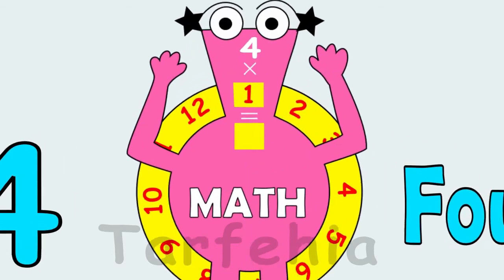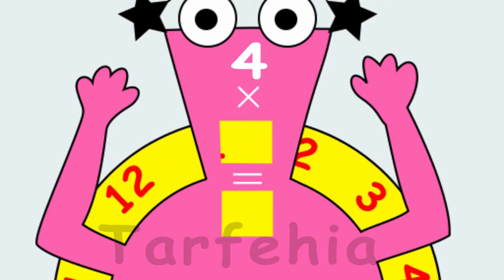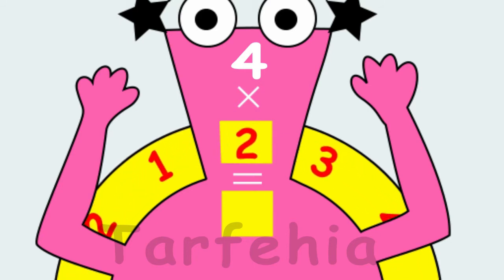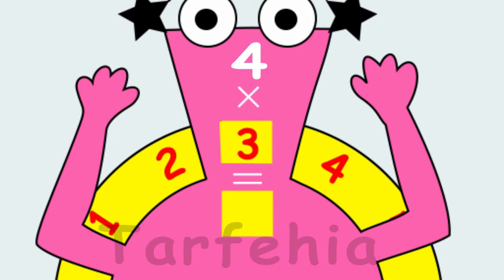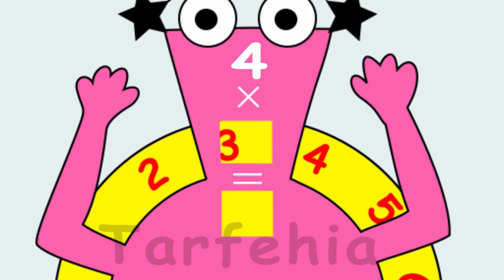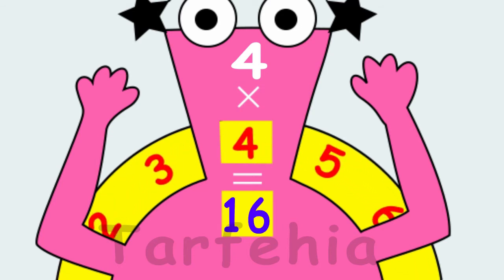Four times one equals four. Four times two equals eight. Four times three equals twelve. Four times four equals sixteen.